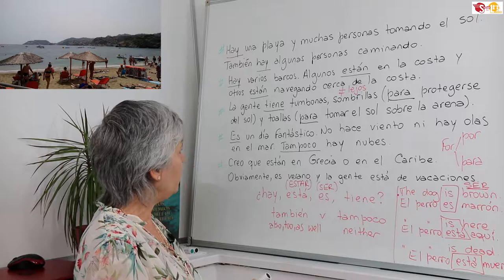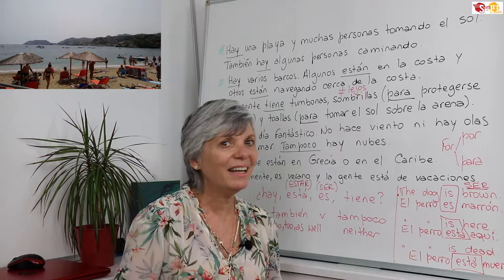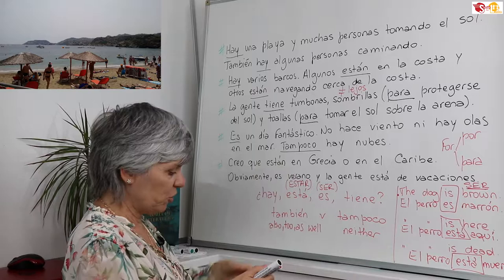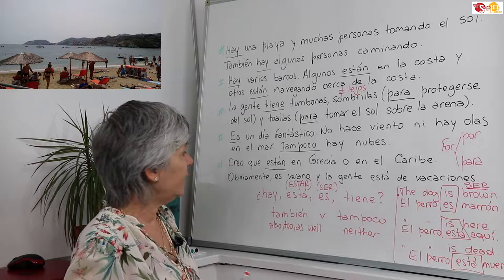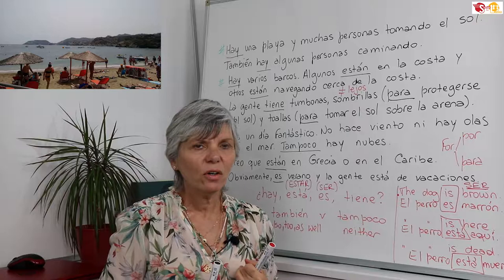Y finalmente, creo que están en Grecia o en el Caribe. Remember, make inferences — your teachers say all the time: give reasons, make inferences. Creo que — I believe that they are located (location → verb estar) in Greece or in the Caribbean. Obviamente, es verano y la gente está de vacaciones. Es verano — to say the days of the week: es lunes, es miércoles; or the seasons, we use the verb ser.